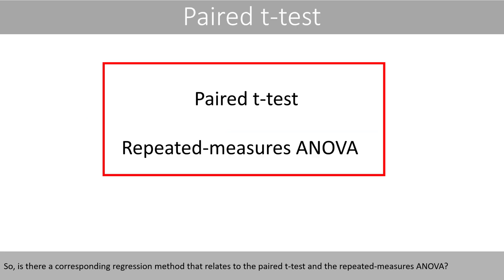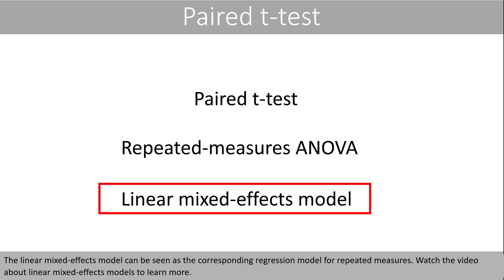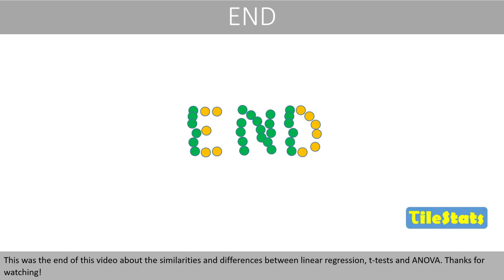Is there a corresponding regression method that relates to the paired t-test and the repeated measures ANOVA? The linear mixed effects model can be seen as the corresponding regression model for repeated measures — watch the video about linear mixed effects models to learn more. This was the end of this video about similarities and differences between linear regression, t-test, and ANOVA. Thanks for watching!